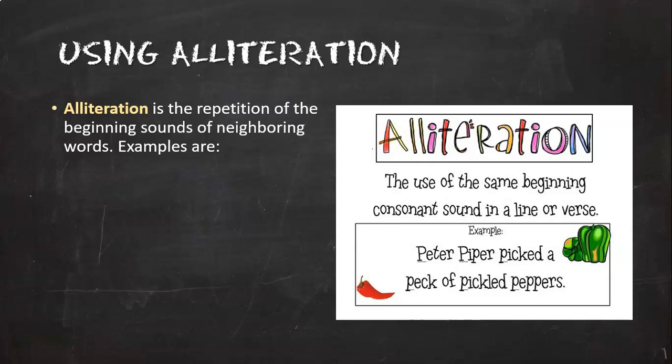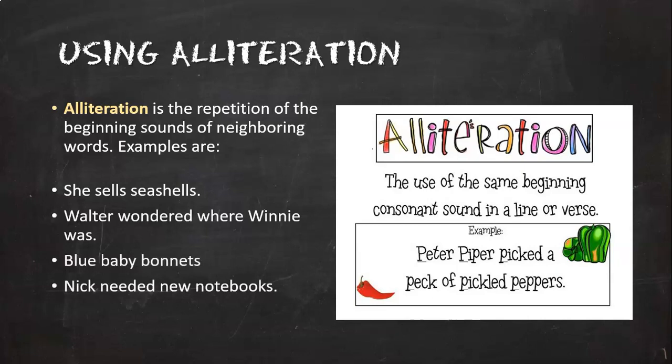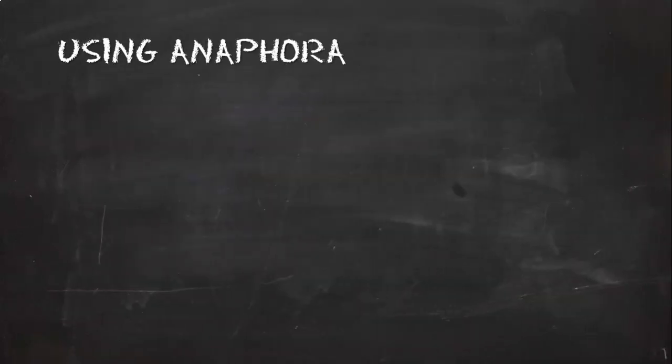I'm back and I'm going to try to do it three times fast. Here we go: Peter Piper picked a peck of pickled peppers, Peter Piper picked a peck of pickled peppers, Peter Piper picked a peck of pickled peppers. All right, so I have the same beginning consonant sound in each line, right, over and over again. Here's another one you've heard a lot. You can try all these on your own. She sells seashells by the seashore. Walter wondered where Winnie was. Blue baby bonnets. Nick needed new notebooks. That's all alliteration is.